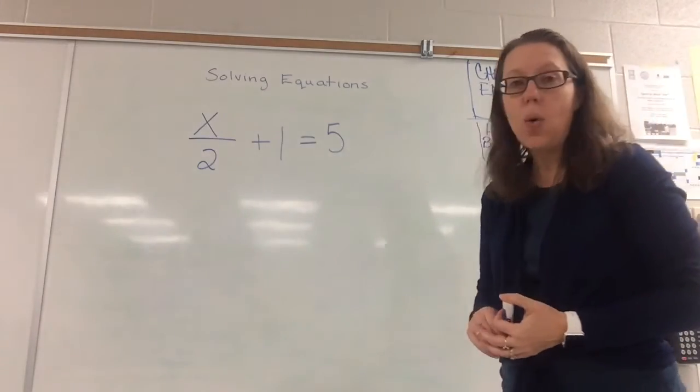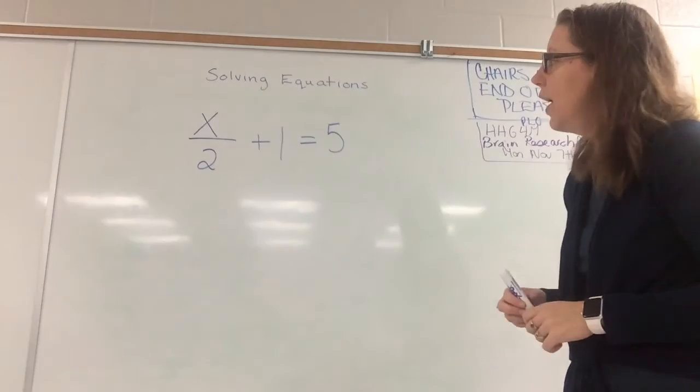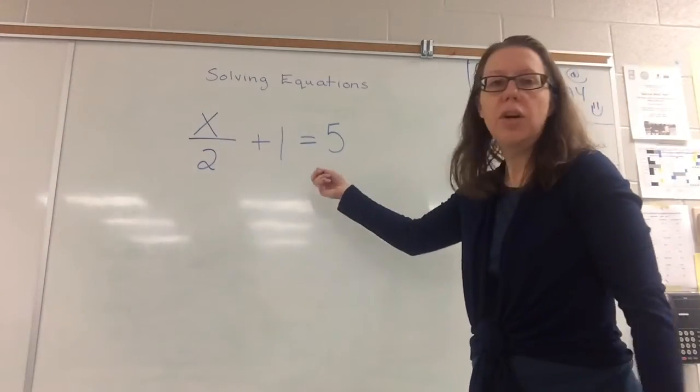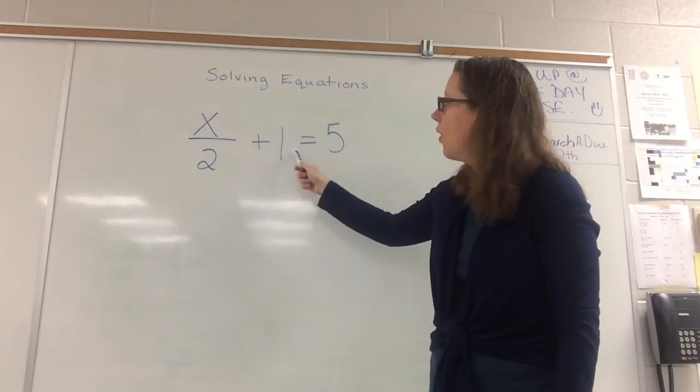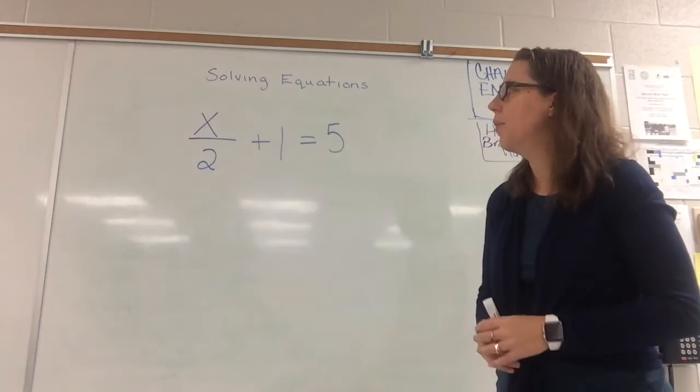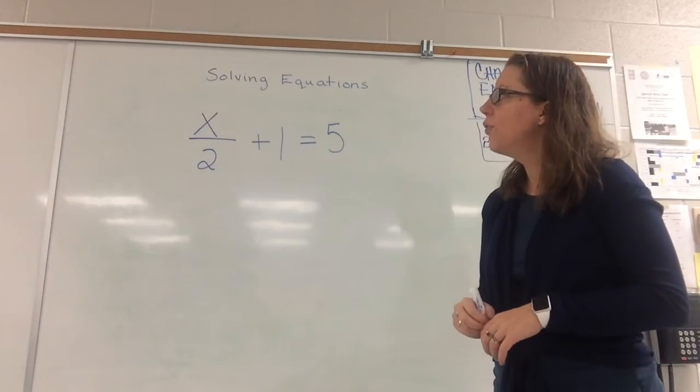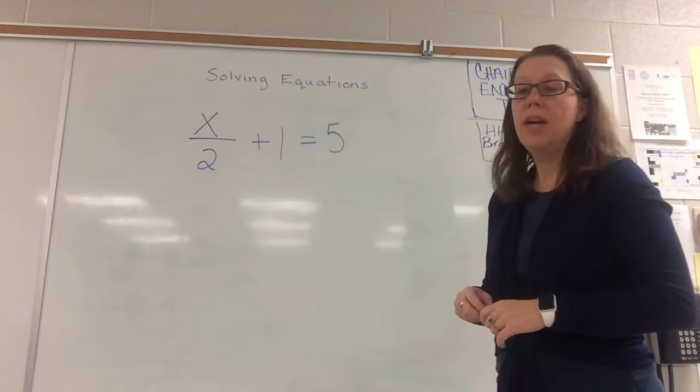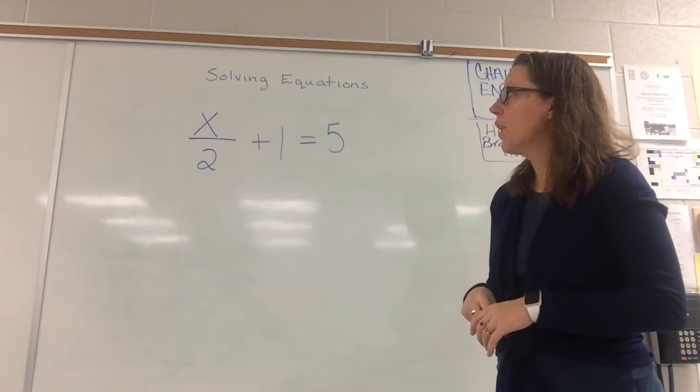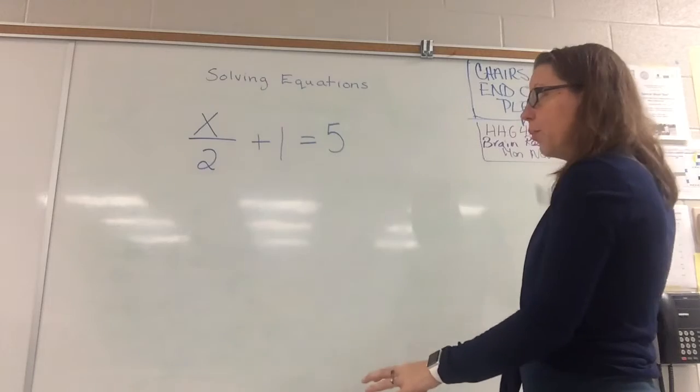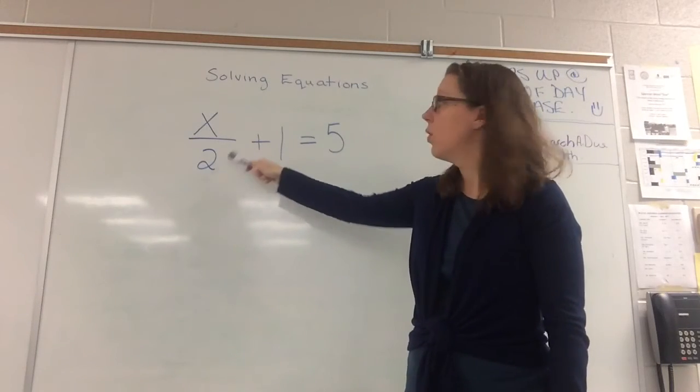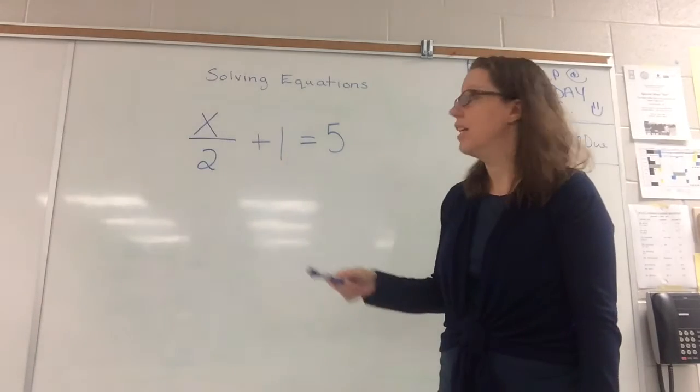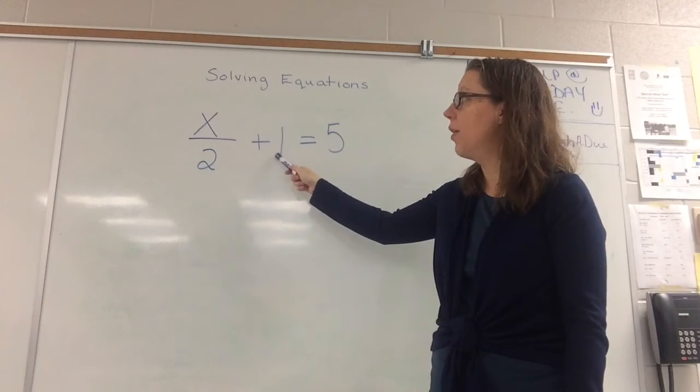Again when solving equations, we always want to get x or y or z all by itself. So when we look at this question, we have x, but we've got this 2 here, we've got this 1 here. They're all in the way from us knowing whatever x is. So what we want to do here is get all the x's on one side and the numbers on the other side. The easiest thing to do would be to get rid of this 1 first.